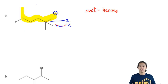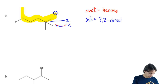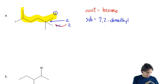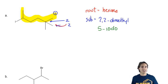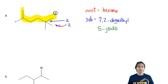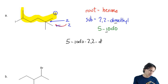So now I look at the substituents. I've got a 2,2-dimethyl and I also have a 5-iodo. In terms of alphabetical order: di doesn't count, so I look at M versus I — I comes first in the alphabet, so it would be 5-iodo-2,2-dimethylhexane.